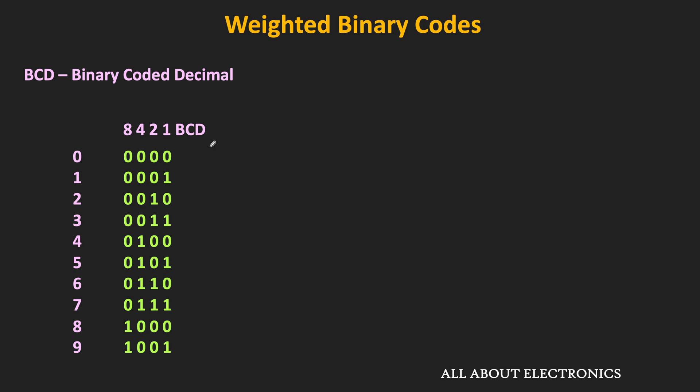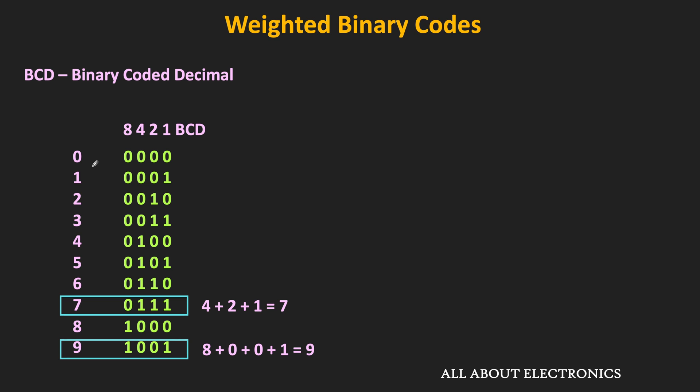The summation of all these weights represents the equivalent decimal number. For example, if we take the BCD code 0111, there is a 1 in the position of 4, 2, and 1. All these ones get multiplied by the corresponding weights, and adding all those weights gives the decimal equivalent number. Similarly, for the code 1001, there is a 1 in the position of 8 and 1, so the summation equals 9. So 8, 4, 2, and 1 represent the weight of each position.